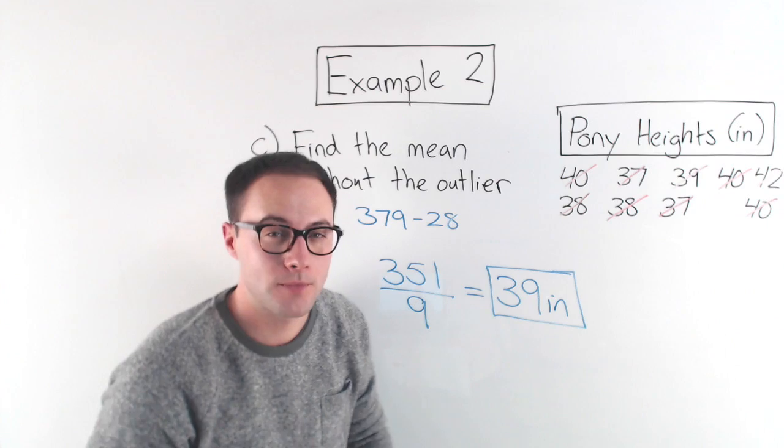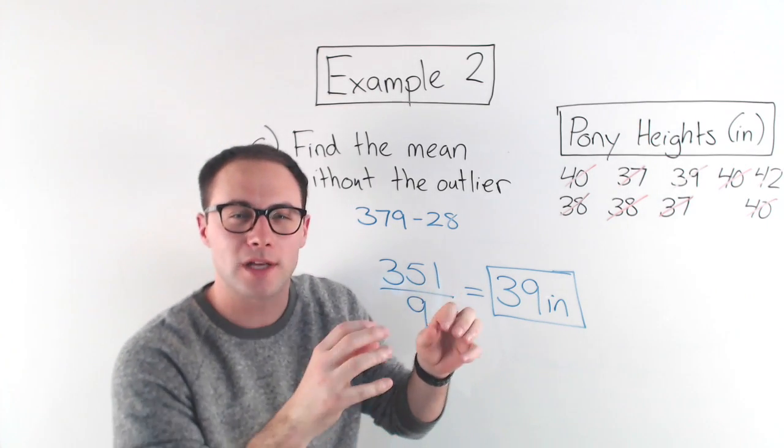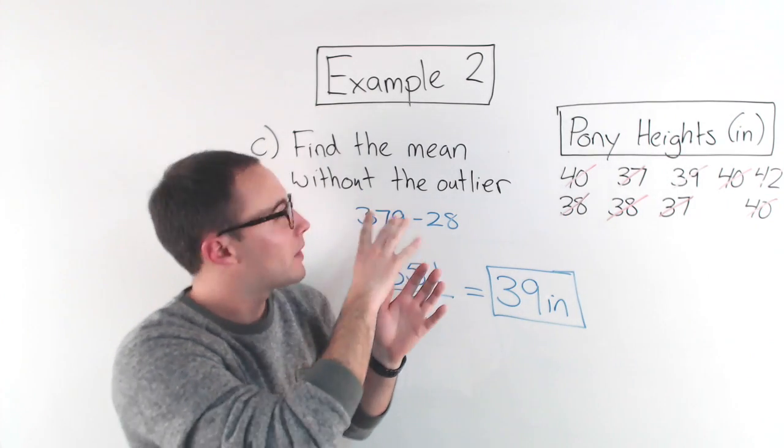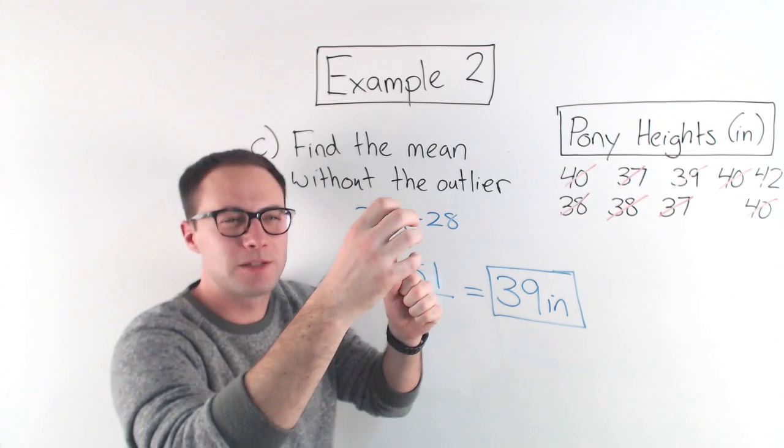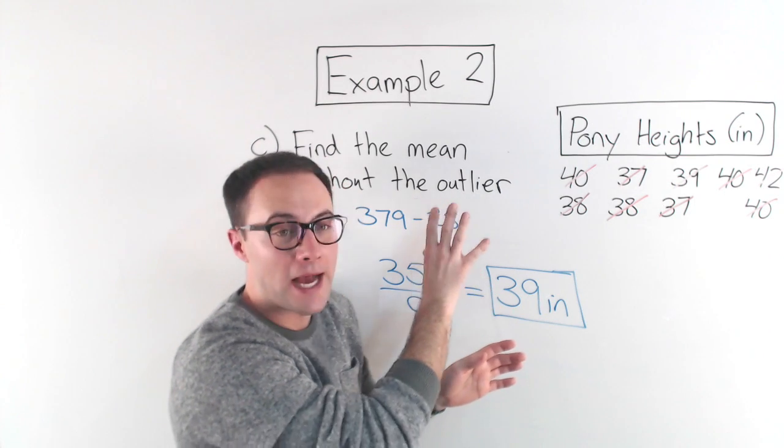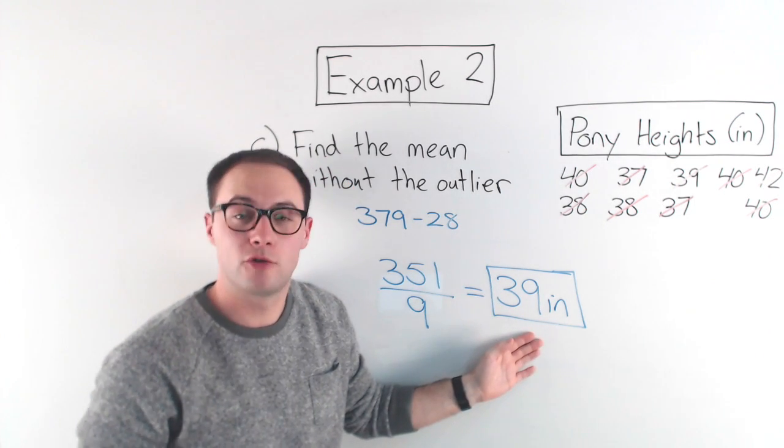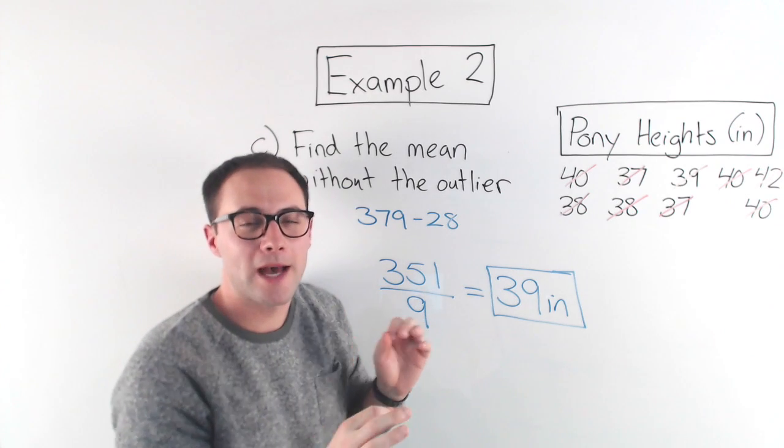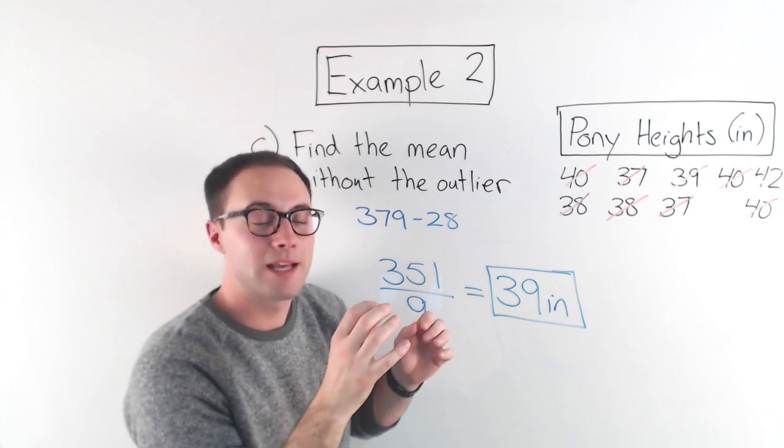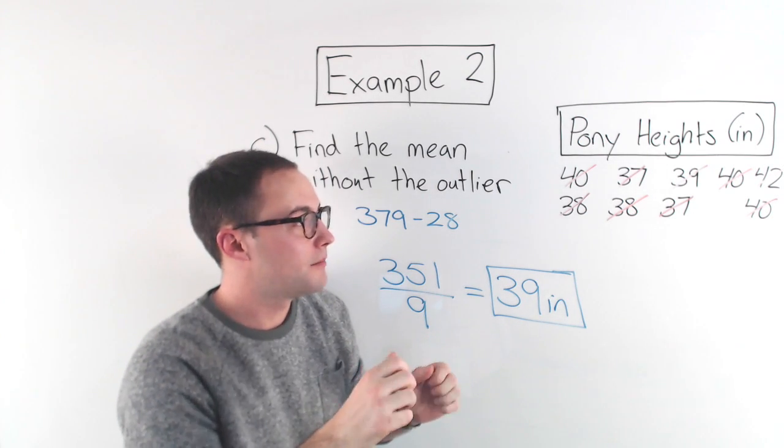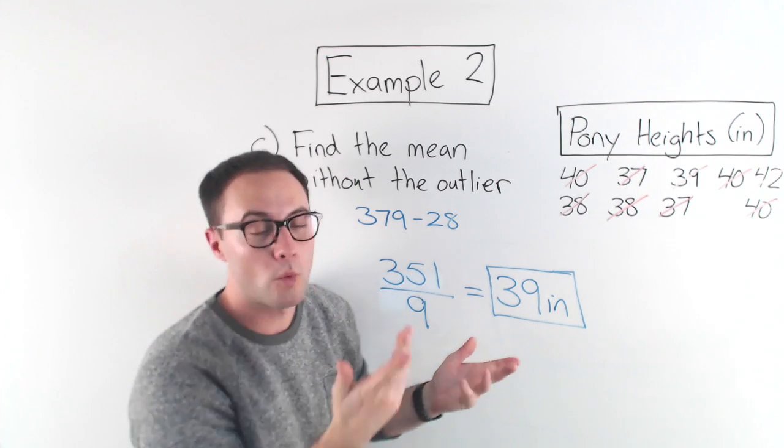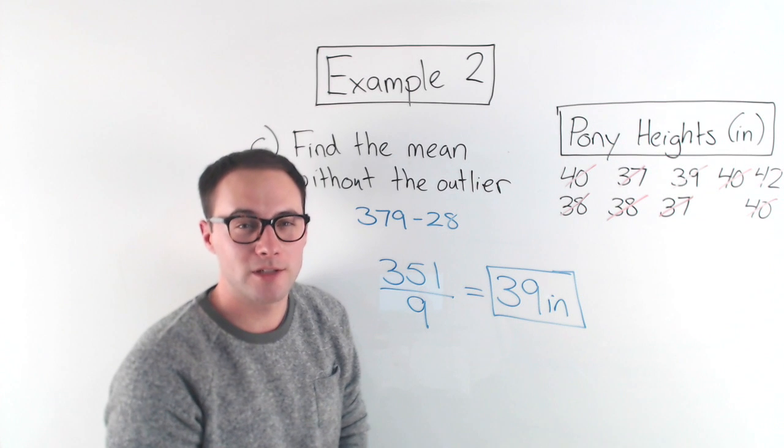And notice they're different, and the reason, if you think about it, the outlier was a lot less than the rest of my values. So when I included the outlier when I was calculating the mean, you can think of it as it's bringing down that mean, it's bringing down the average. If we don't include the outlier, notice our mean was greater, it was higher. So keep that in mind. When you're calculating mean, the outlier, if there are some, can really affect your mean. They can either make it a lot greater than it probably should be, or a lot less than it probably should be, depending on where that outlier is. Here's some more to try on your own.